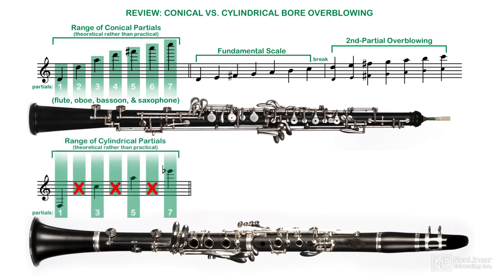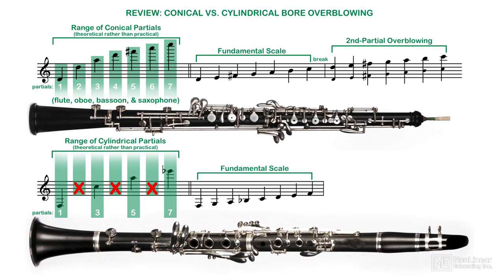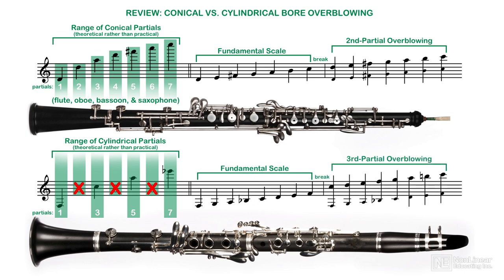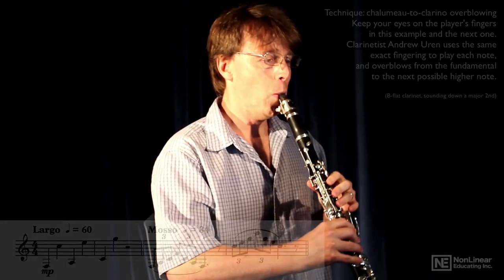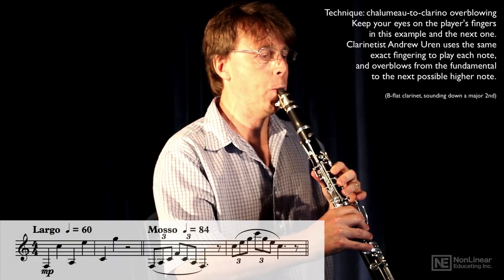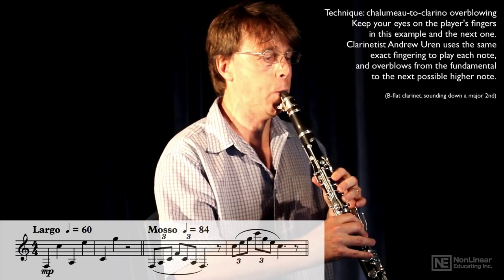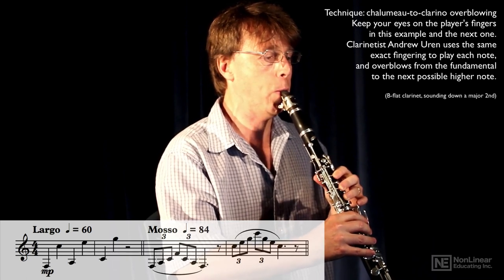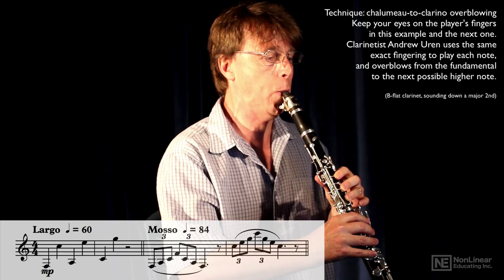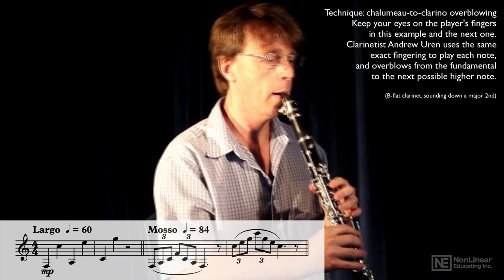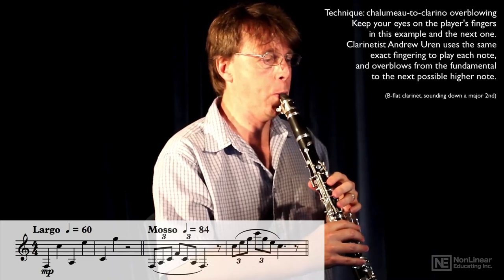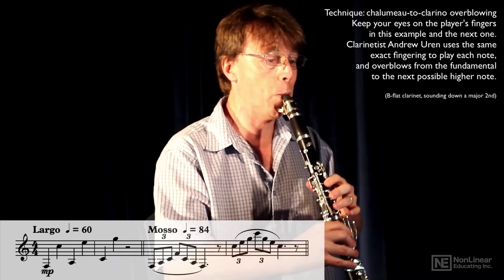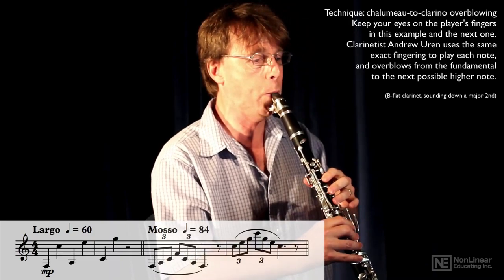But the clarinet can't do this. As we saw in the Orchestration 102 course, the clarinet can only overblow odd-numbered partials. So it jumps from the fundamentals, or first partial notes, directly up an octave plus a perfect fifth to the third partials.